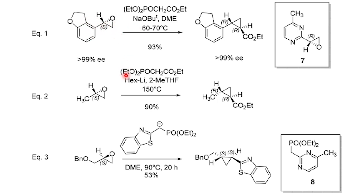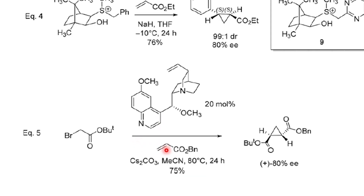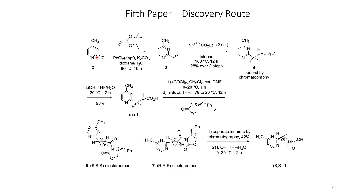The first one kind of resembles a Horner-Wadsworth-Emmons, but instead of using a carbonyl like an aldehyde or a ketone, using an epoxide, a cyclopropane was able to be formed. Some similar examples with other ylides are seen here, such as the sulfonium-based ylide, and ultimately the authors decided to try and use DABCO in a method similar to equation 5. Before the authors got to this, their initial discovery route was as follows.